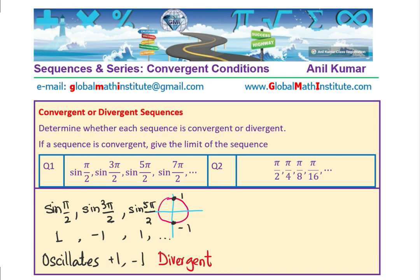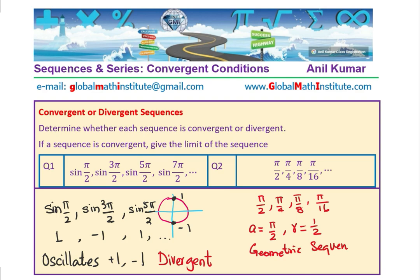Question 2: the sequence is π/2, π/4, π/8, π/16... Each term is being multiplied by 1/2. The first term a is π/2 and r, the ratio between each term, is 1/2. So it is a geometric sequence. In a geometric sequence, when the absolute value of r is less than 1 — here r = 1/2 — the sequence is convergent.